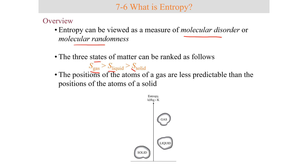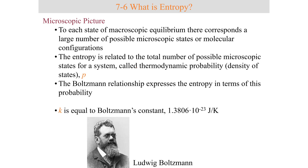The positions of the atoms of a gas are less predictable than the positions of atoms of a solid, so the entropy would be higher. Each state of macroscopic equilibrium corresponds to a large number of possible microscopic states of molecular configurations. The entropy is related to the total number of microscopic states, called thermodynamic probability, and the Boltzmann relationship expresses entropy in terms of this probability. The key takeaway is that entropy is a measure of disorder.